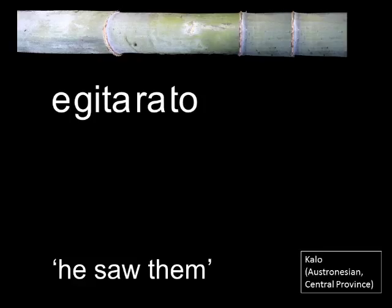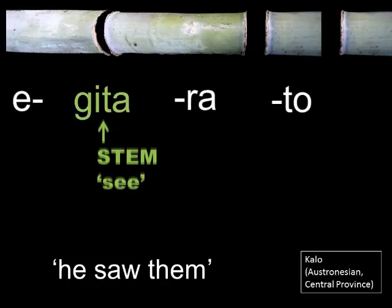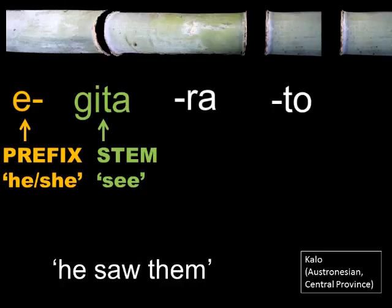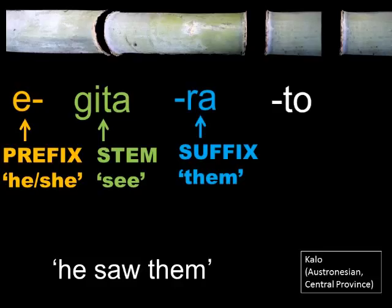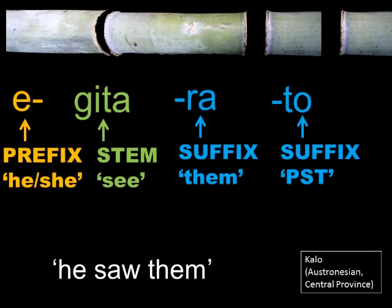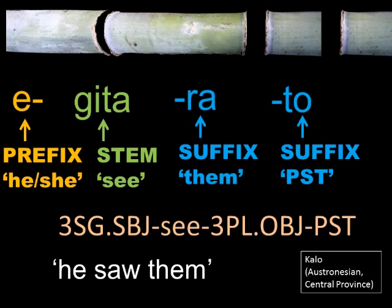Let's split the Kalo word into its different morphemes. First, we find the stem 'gita', which is to do with seeing — this is the part with lexical meaning that we could look up in a Kalo dictionary. Before 'gita', we have the prefix 'i', which tells us who is doing the seeing — he or she, a third person singular subject. After the stem, there are two suffixes. The first suffix 'ra' tells us what was seen: several things or people, them — a third person plural object. Finally, the last suffix 'to' tells us that this seeing happened in the past, not now. So we translate as 'he saw them' rather than 'he sees them'. Linguists would gloss this whole word to show the meaning of each morpheme separated by hyphens, indicating that a third person singular subject saw several third person plural objects in the past.